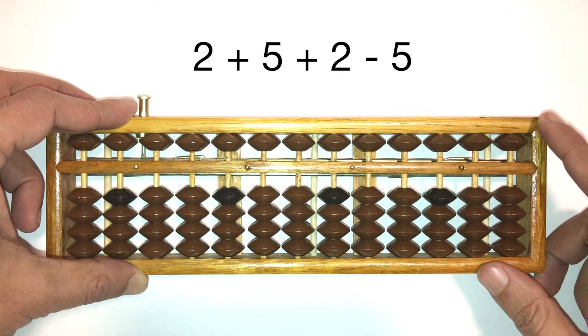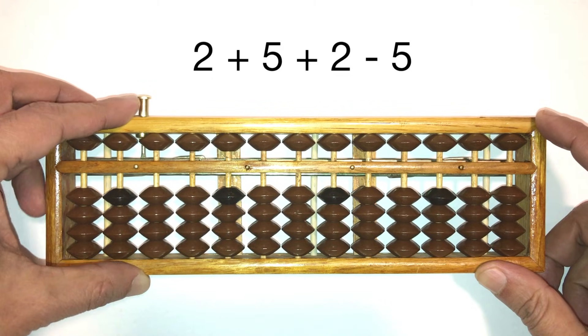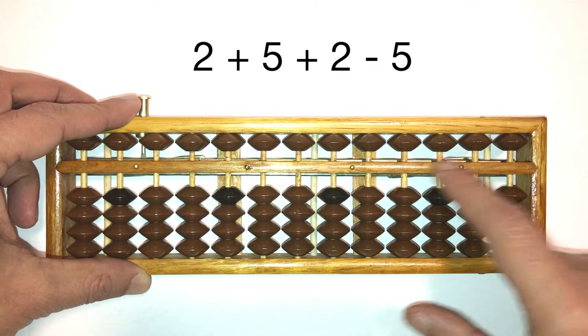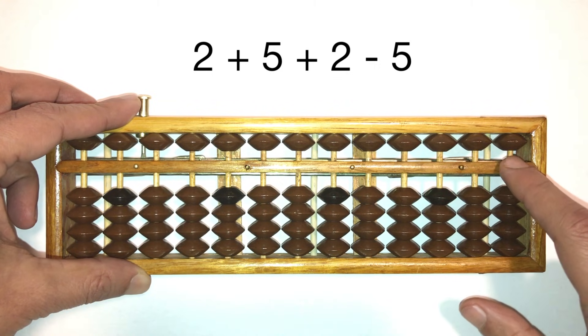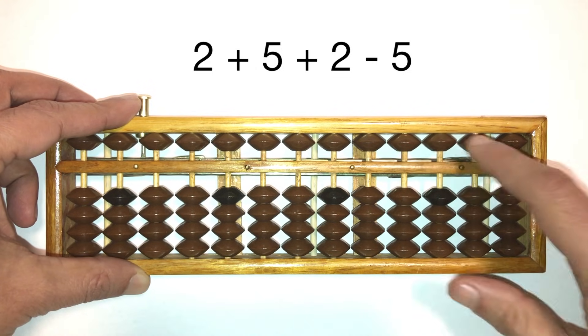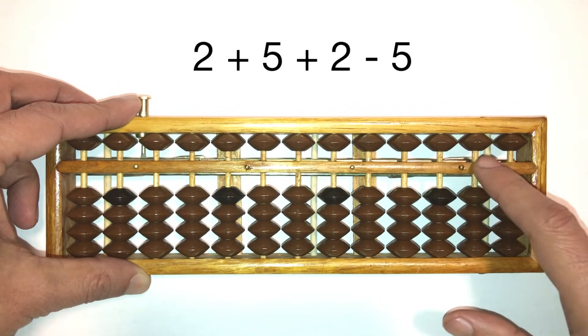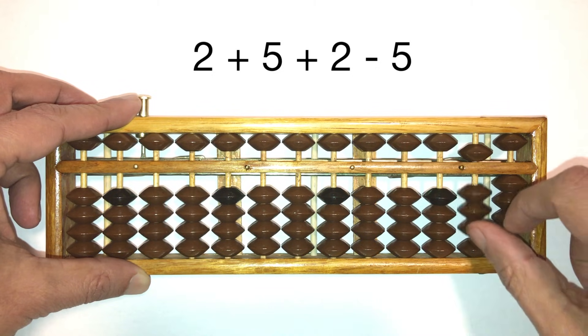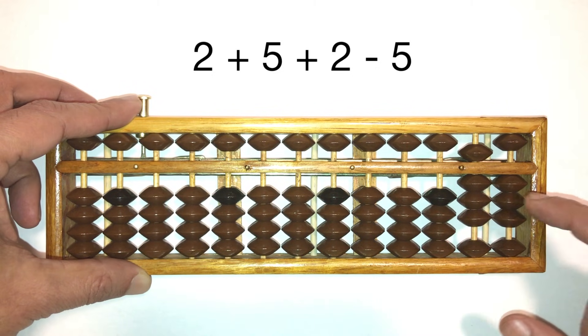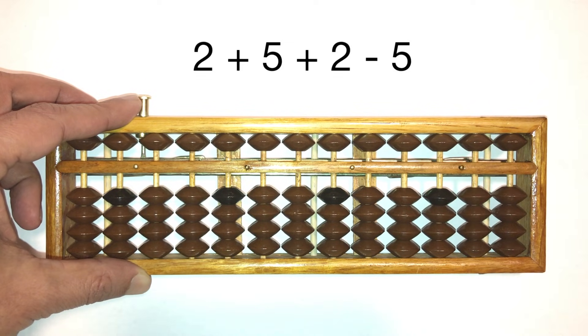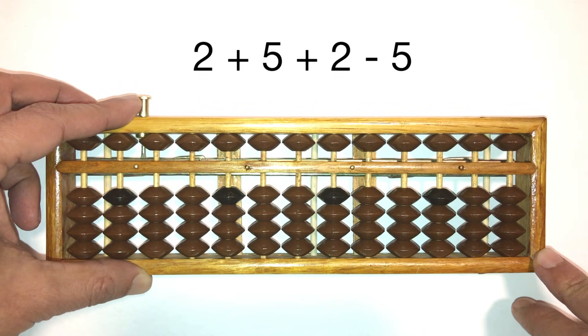I like to point out a couple of things right off the bat. As we saw earlier, a bead is counted in the answer only when it touches the answer bar. That's why from the zero position, zero position being where none of these beads touch the answer bar, when adding you're moving beads towards the answer bar. And when subtracting you're moving them away from the answer bar. Alright, with that in mind let's begin.